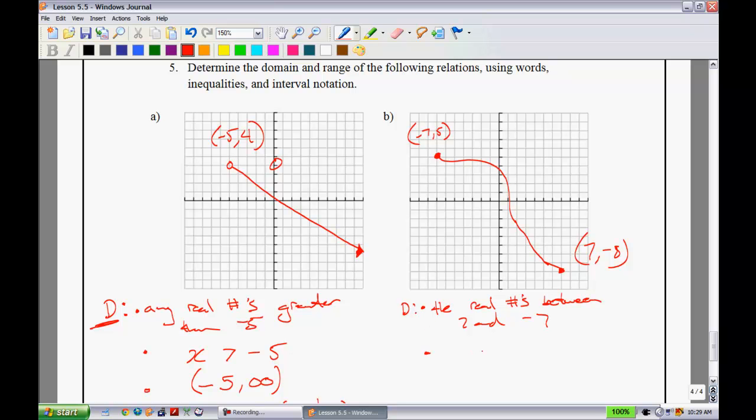7 and negative 7. In terms of using the inequality notation, this is where we have to use that between thing. Since we're including both the points, we're going to put x must be less than or equal to positive 7, and greater than or equal to negative 7. Like so. All right.